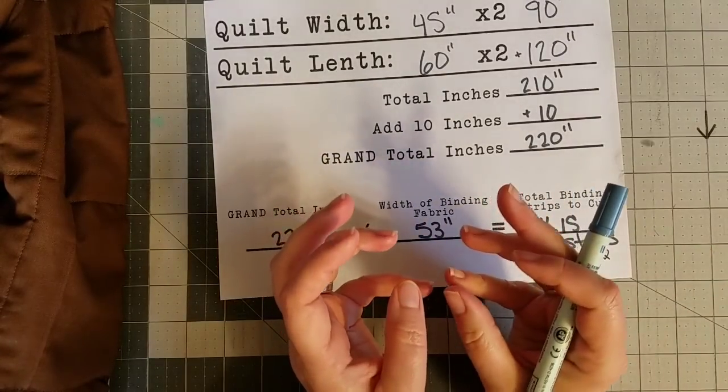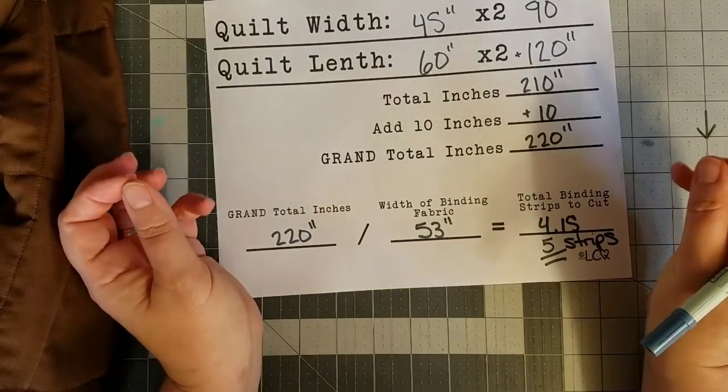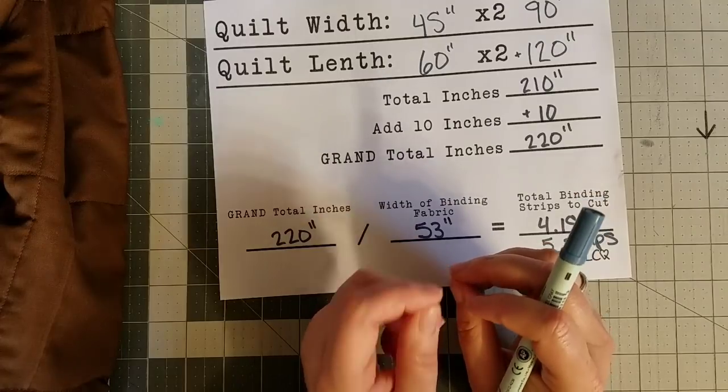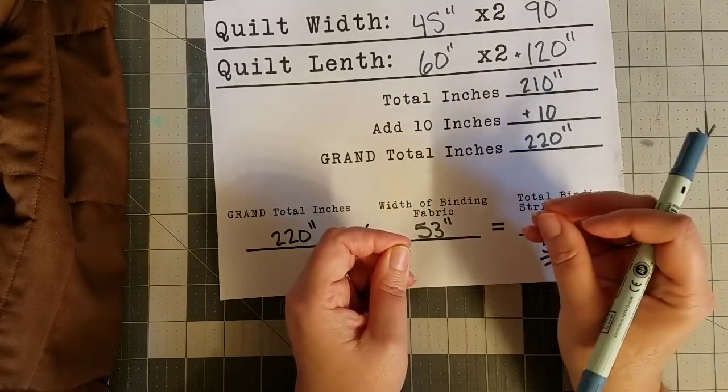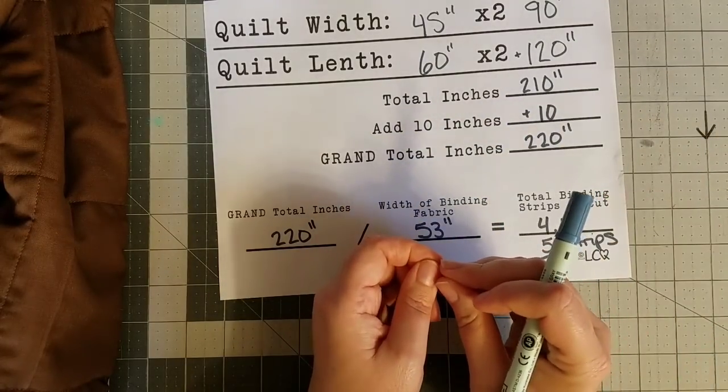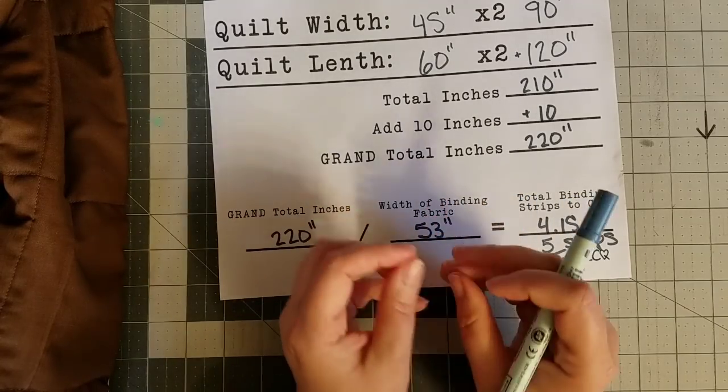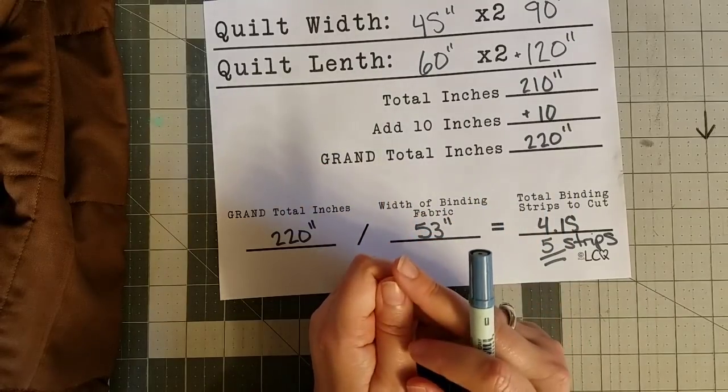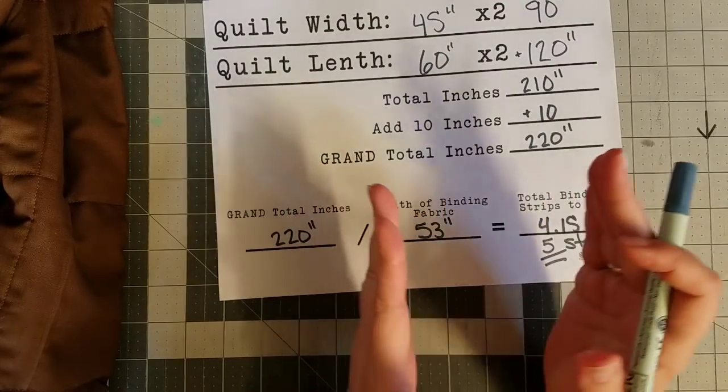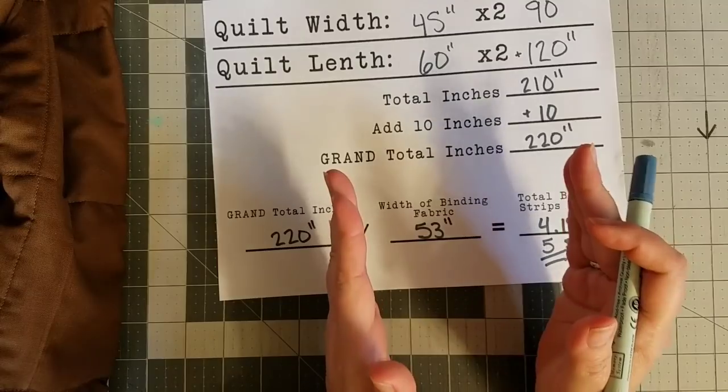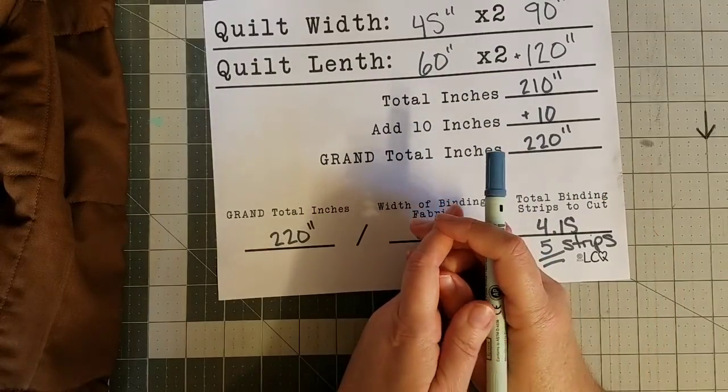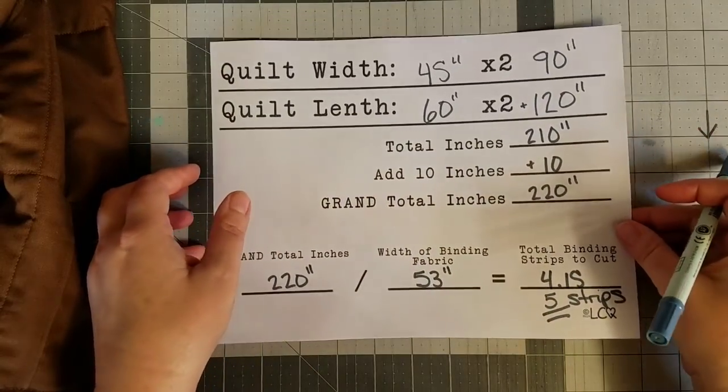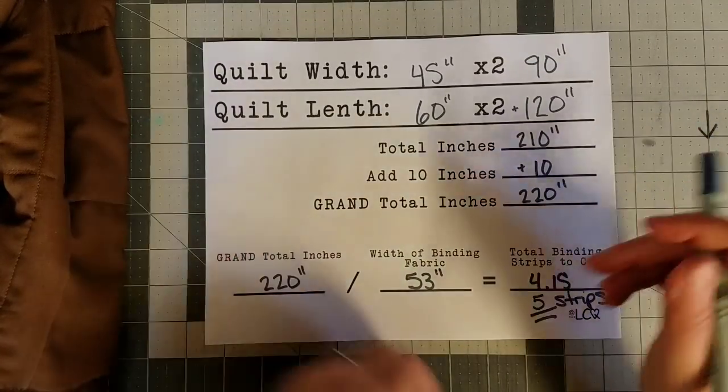But it's going to make everything so much easier when you're coming to close off your binding where you started and where you're leading up to at the very end. You'll have some extra, but you'll have plenty to work with, and you won't have to worry about running out of binding when you're a little bit too short. So this is the method that I use to figure out how much binding I need.